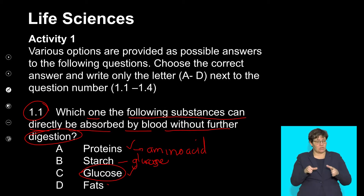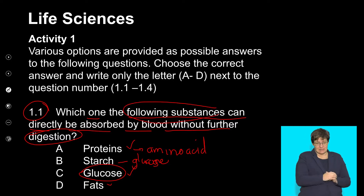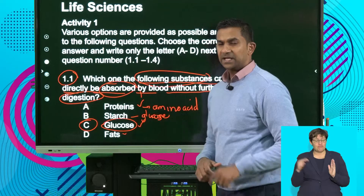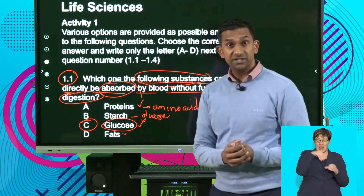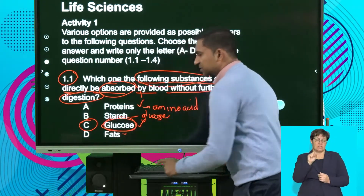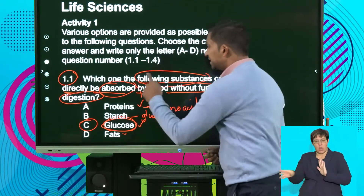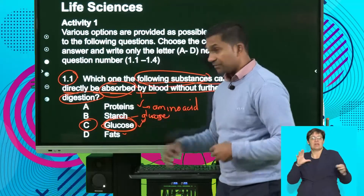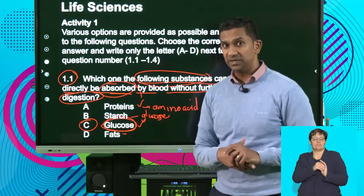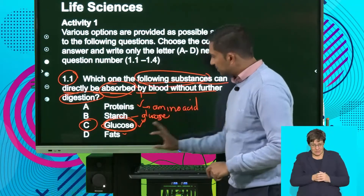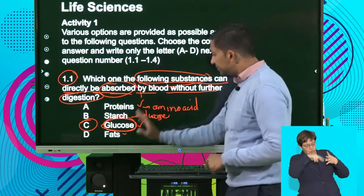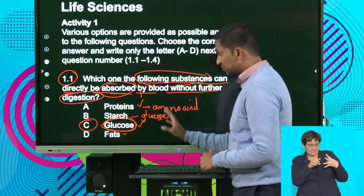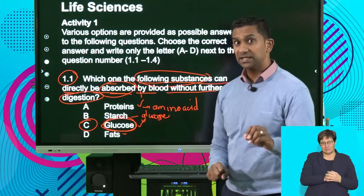Fats are broken down into fatty acids and lipids, so when we look at this question — which of the following substances can be directly absorbed — the answer is C, glucose. If you reflect on what many energy drinks contain, they contain large amounts of glucose so that it can be readily absorbed without chemical breakdown, giving an immediate release of energy. When reading a multiple choice question, read through the options, eliminate the obvious ones, and focus on the ones most likely to be correct.